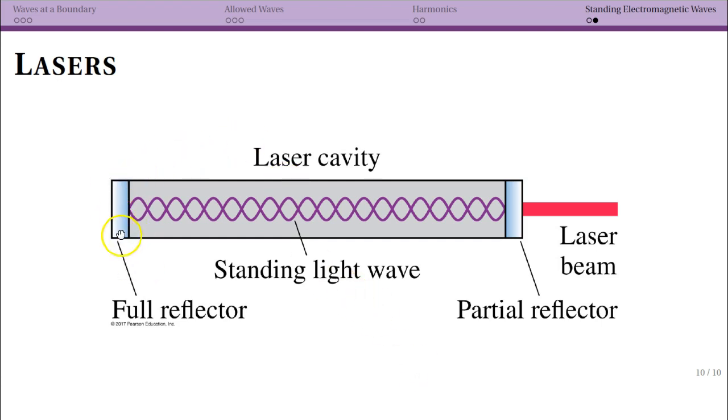The laser is going to use two mirrors. And this mirror is a full reflector, i.e. a normal mirror. It reflects all of the light that hits it. This mirror is a partial reflector. And I don't know the numbers off the top of my head, but for instance, that's maybe transmitting 1% of the light and reflecting 99% of the light.